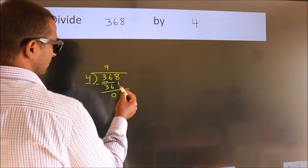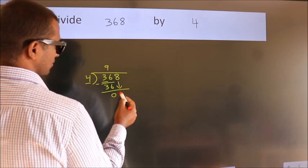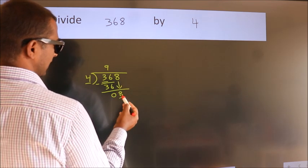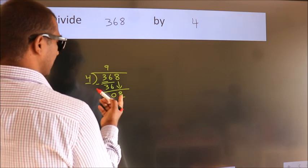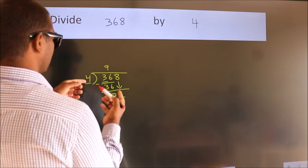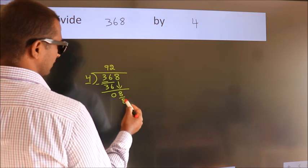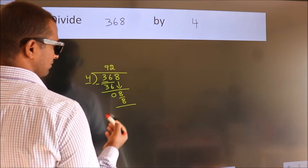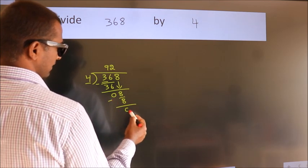After this, bring down the beside number. So, 8 down. When do we get 8 in the 4 table? 4 twos, 8. Now we subtract. We get 0.